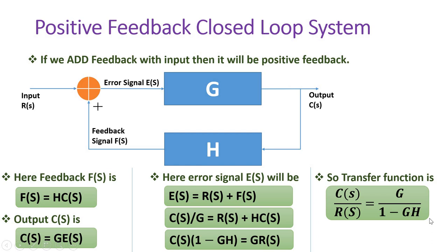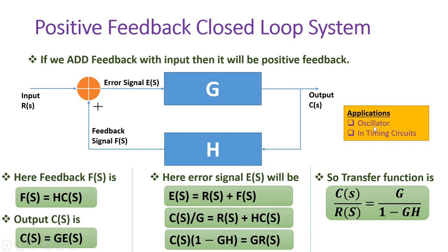In examinations, block diagram reduction problems involving positive feedback use the transfer function G/(1 − GH). The popular applications of positive feedback are oscillators and timing circuits. In analog electronics, oscillators are built using positive feedback, which will be covered in future lectures.